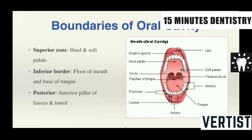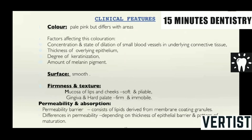The superior part is bounded by the hard and the soft palate. The inferior part is bounded by the floor of the mouth and base of the tongue. The posterior is bounded by the anterior pillar of the fauces and the tonsils. Whatever the structure of the oral mucous membrane is histologically, that is reflected clinically. Hence, learning about the oral mucous membrane is very important because we are going to look into the oral cavity of the patients and view what is happening.